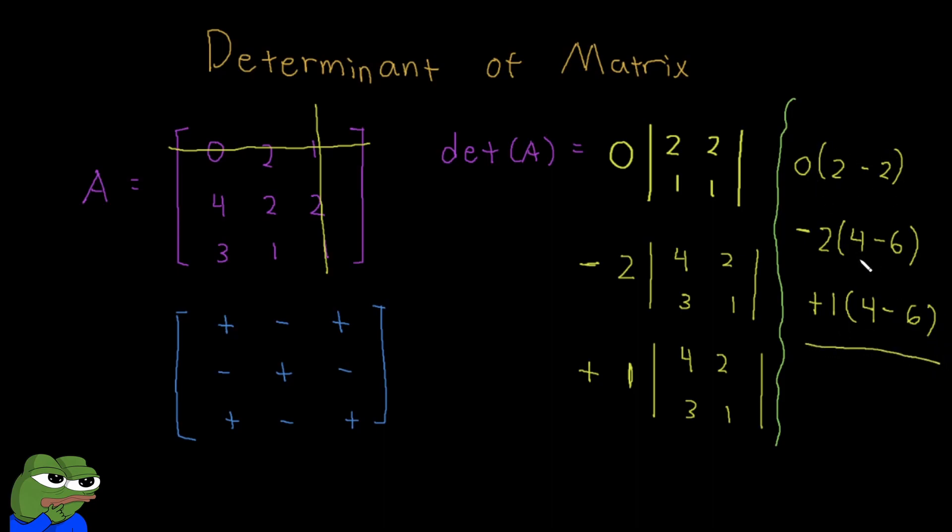And then this would give our final determinant. So our first term is 0. The second term is negative 2 times negative 2, so that's 4. And our third term over here is 1 times negative 2, which is 4 minus 6, so that's minus 2. So our determinant is just 2.